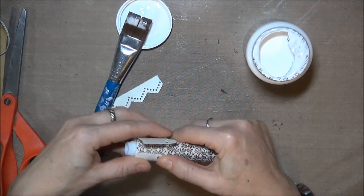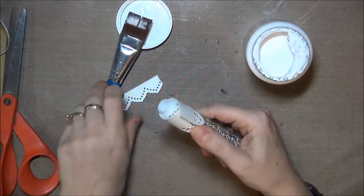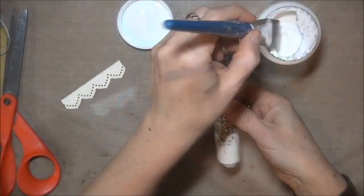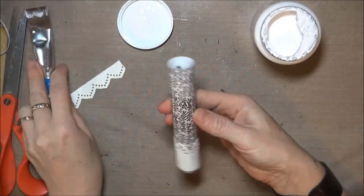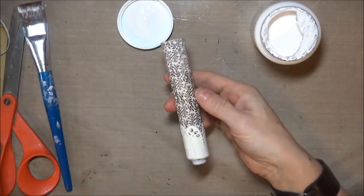I chose a wider border for the bottom of the candle and a more narrow one at the top. The reason I chose a wider border at the bottom was because I knew I was going to put some other decorations at the bottom, and I wanted that wide border to show.